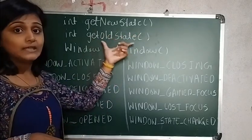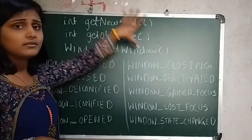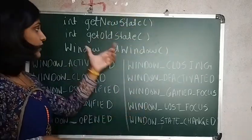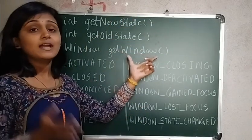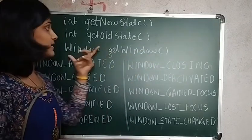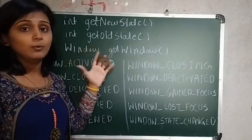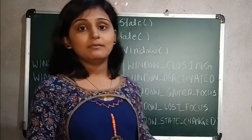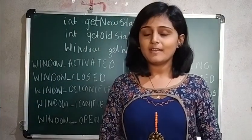These two will return the constants. Now here, getWindow() - what will it return? It will return a window. Just remember what this return type is - its return type is Window. So this was regarding the WindowEvent.